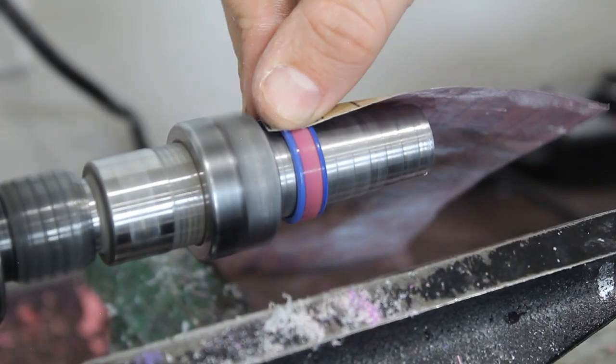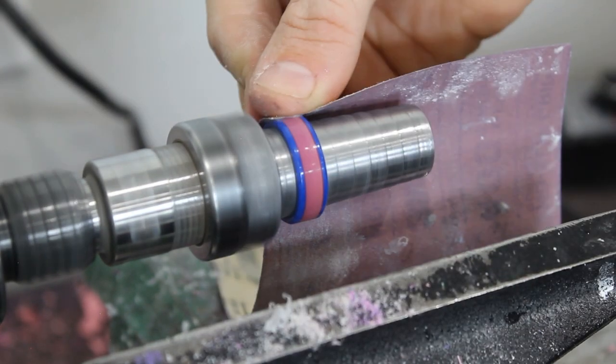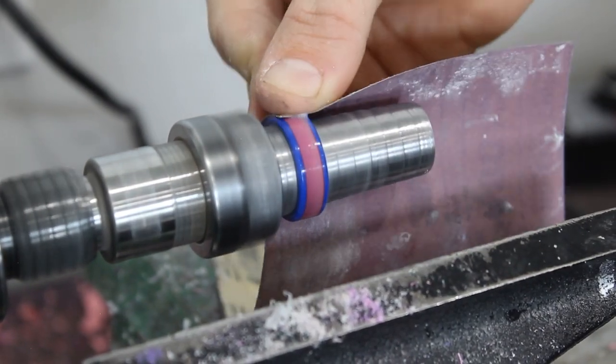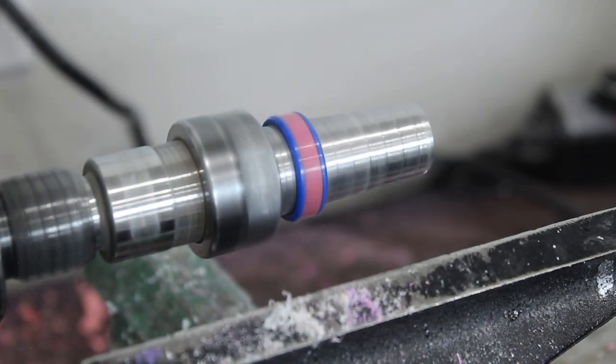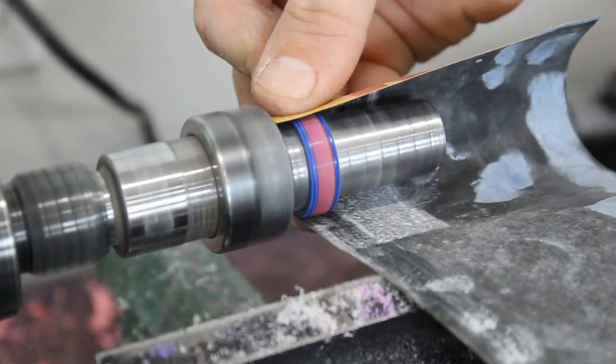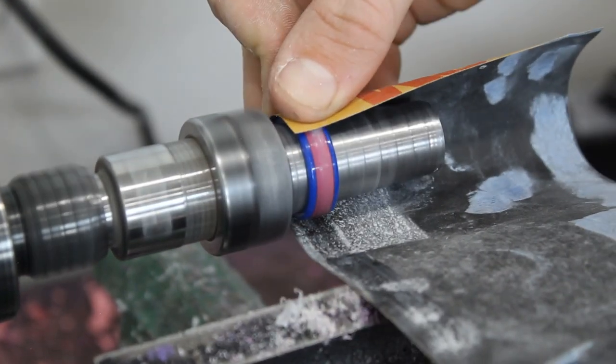We're going to stop the lathe every once in a while, maybe after the 220 or the 400 before you move on, to make sure that all the glue is off of the metal. You don't want to move on to the next step and waste your time until all the glue is off the metal.